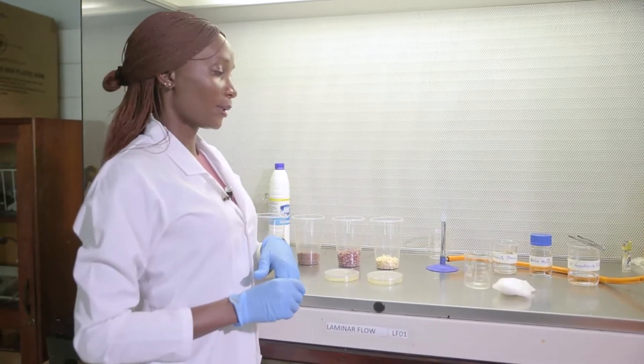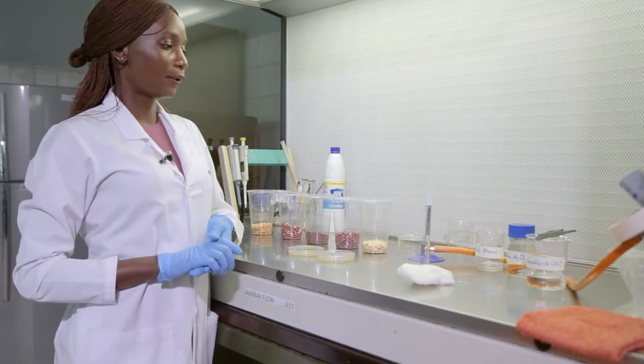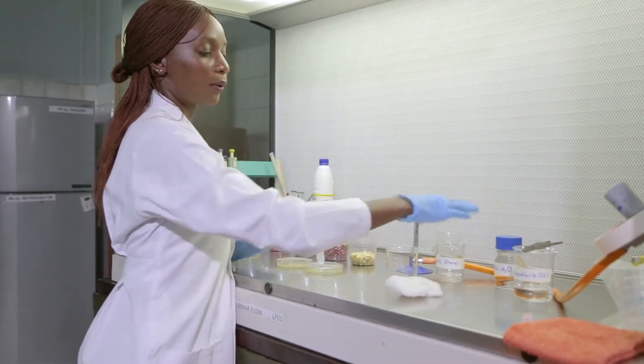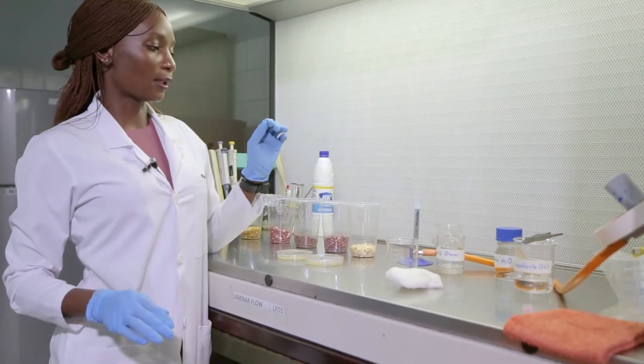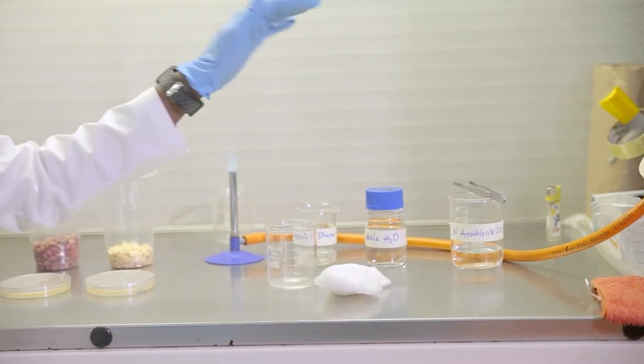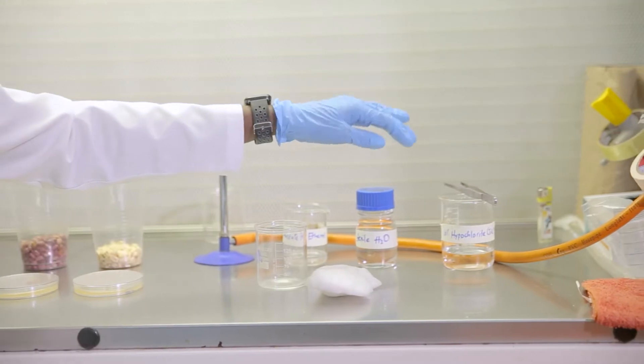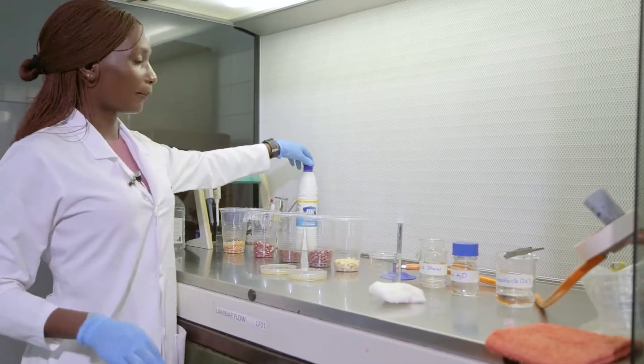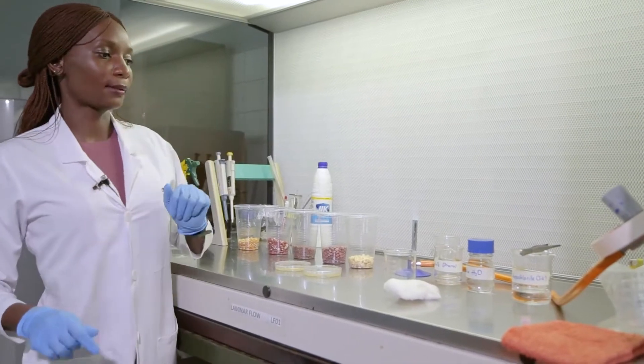The reagents that we are going to use are not many. This is actually a very simple test. We have absolute ethanol here, what we call concentrated ethanol. I have sterile water. You can use distilled water, it's okay. Then I also have 10% hypochlorite, or commercially what we know as JIK.